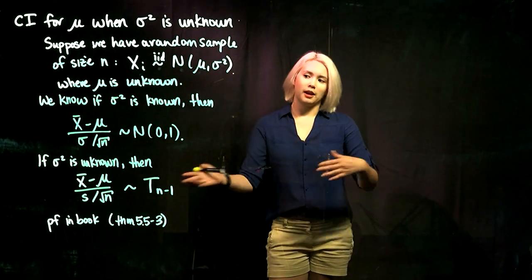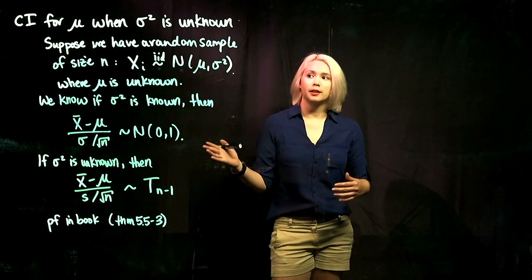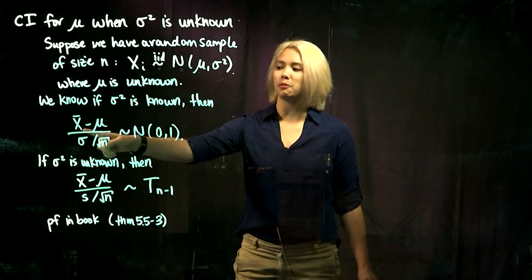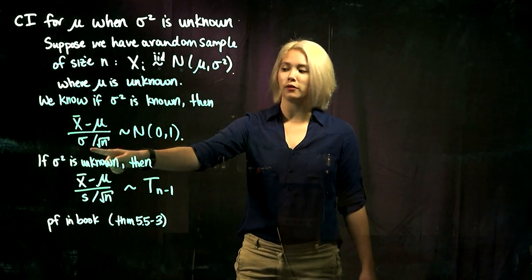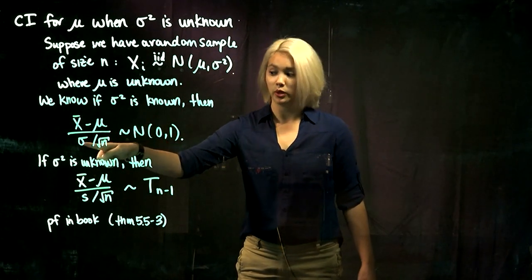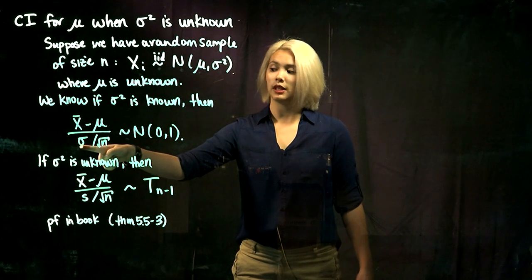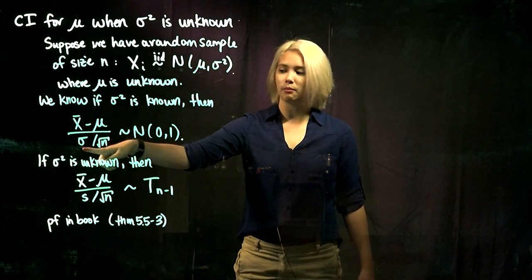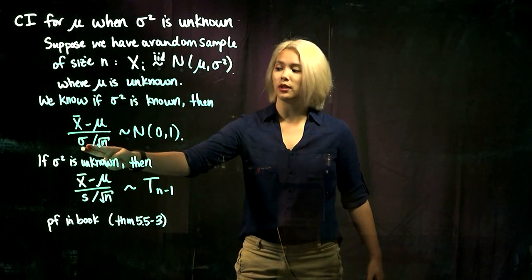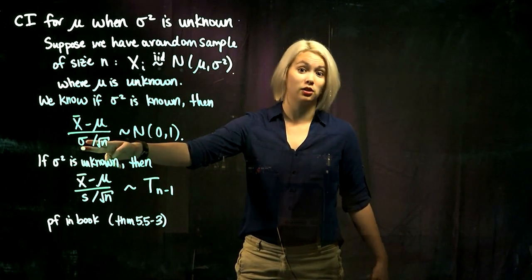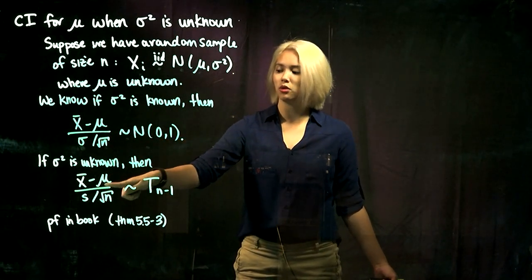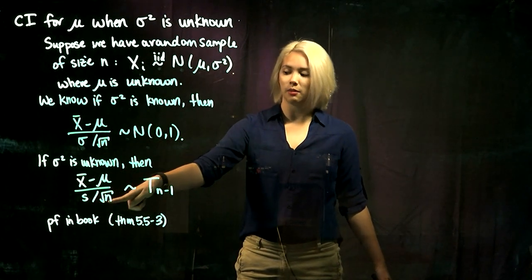When we talked about confidence intervals for mu when sigma squared was known, we knew that x-bar minus mu divided by sigma over root n had a standard normal distribution. But we do not know sigma usually. So what do we do if we can't plug in sigma? An intuitive thing to do is swap out the population standard deviation for the sample standard deviation. If we do that, we get x-bar minus mu over s divided by root n.